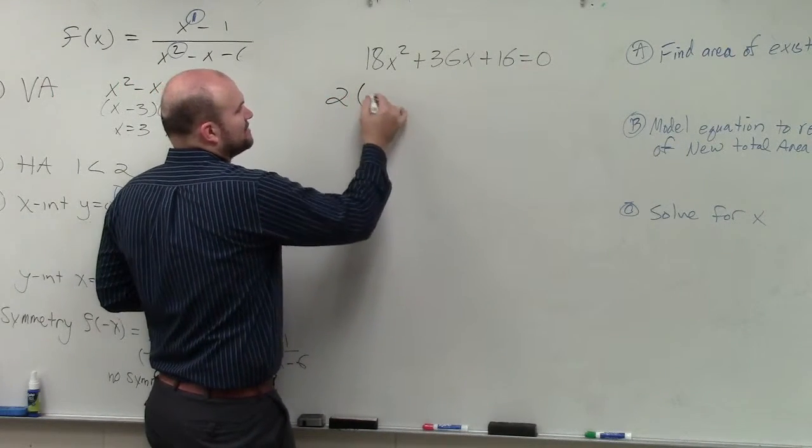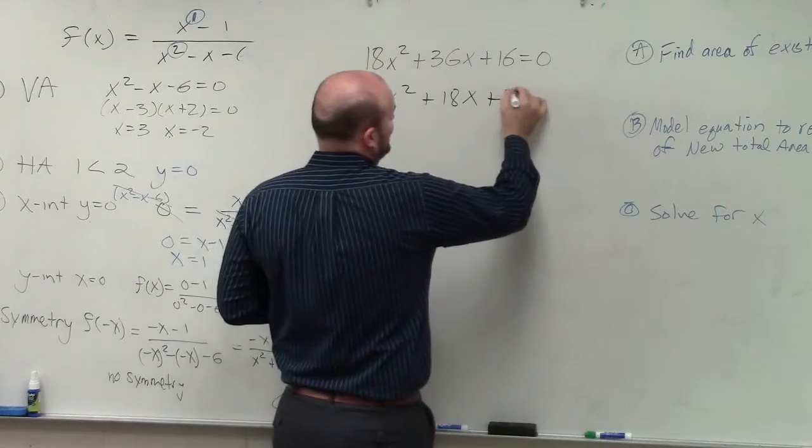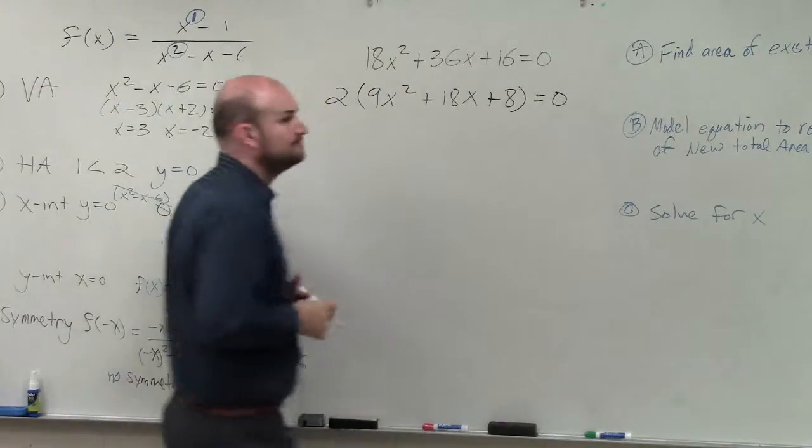So when I factor out a common 2, I get 9x squared plus 18x plus 8 equals 0, correct?